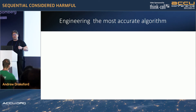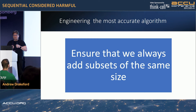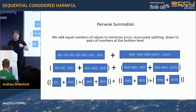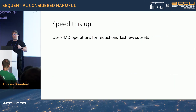Now we're going to try and engineer the most accurate algorithm. Here we want to add subsets of the same size. If we had 128 elements, we could split in two and have sums over 64, right down to the bottom where we're just adding pairs of numbers, then sums of pairs of pairs, all the way to the top. Pairwise summation. We could even speed up the bottom level using SIMD.